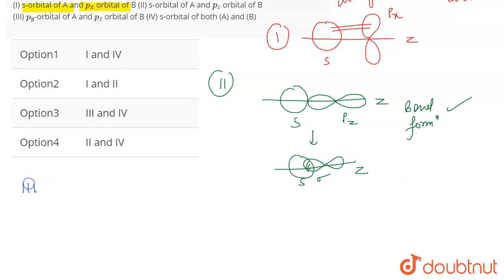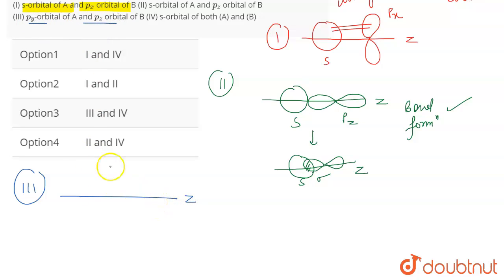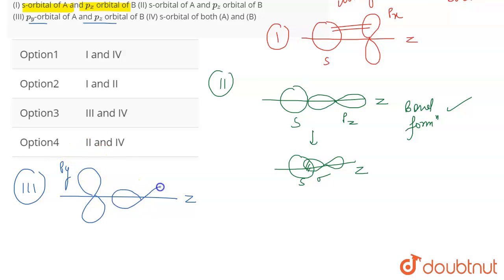The third case is the py orbital of A and the pz orbital of B, with z as the internuclear axis. The py orbital is perpendicular to pz — px, py, and pz are all perpendicular to each other in the x, y, z plane. This results in unsymmetrical overlap, and again no bond formation will take place.